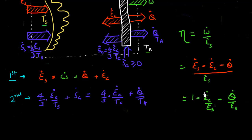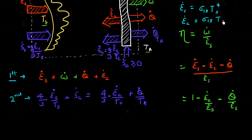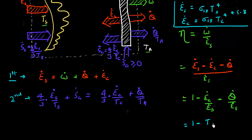Looking at the term E_C/E_S, this compares the energy flux coming from the cell divided by the energy flux coming from the sun. I've treated both the cell and the sun as black bodies, so I can make use of the Stefan-Boltzmann law. The energy flux coming from the sun is proportional to the fourth power of the temperature of the sun. Similarly, the energy flux coming out from the cell is proportional to the fourth power of the temperature of the cell. Taking these two equations and dividing, I get a term proportional to T_C^4 / T_S^4.